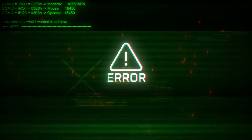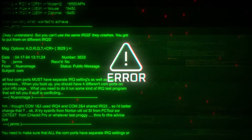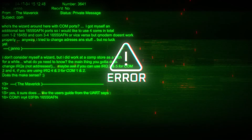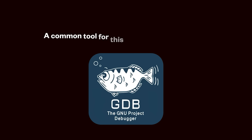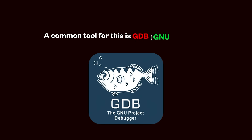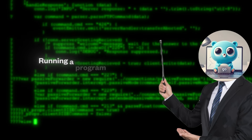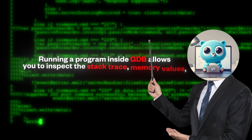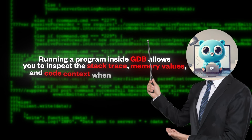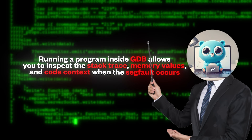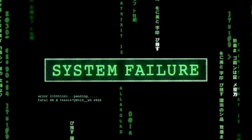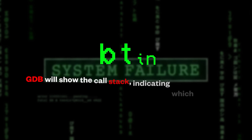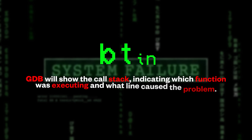Debugging segmentation faults requires inspecting the program's memory access patterns. A very common tool for this is GDB, or the GNU debugger. Running a program inside GDB allows you to inspect the stack trace, memory values, and code context when the segfault occurs. For example, after a crash, typing 'bt' in GDB will show the call stack, indicating which function was executing and what line caused the problem.